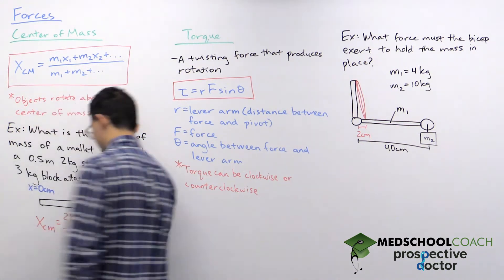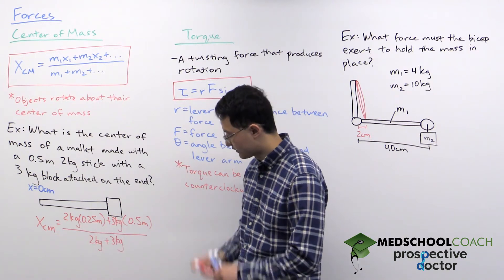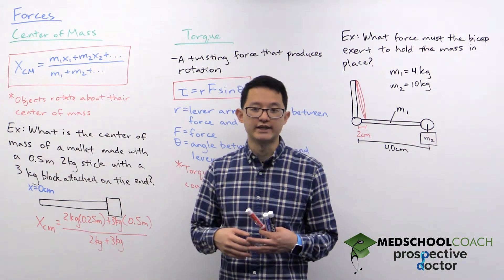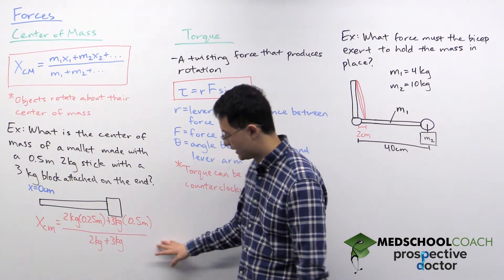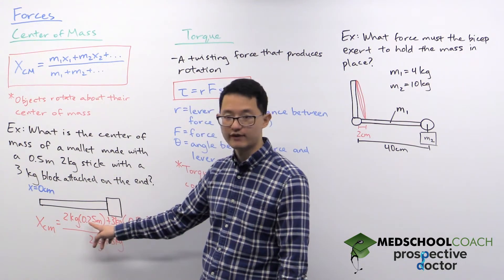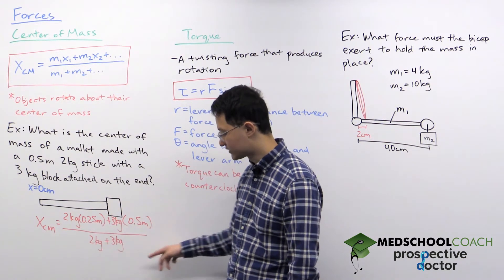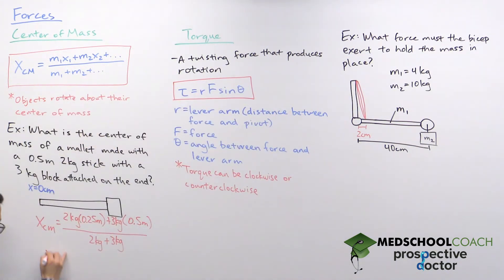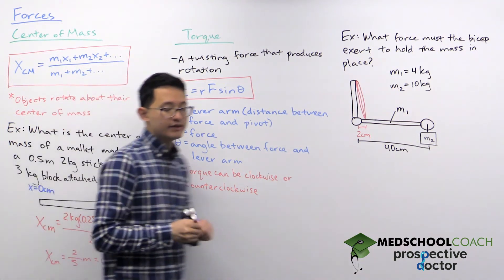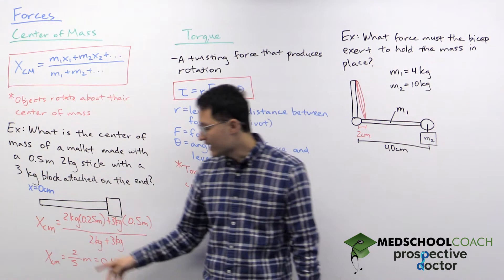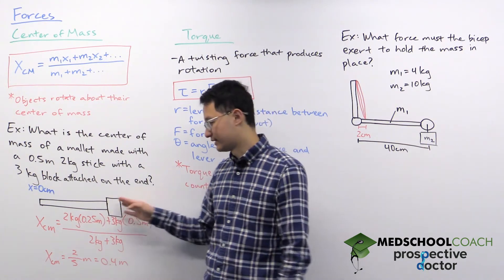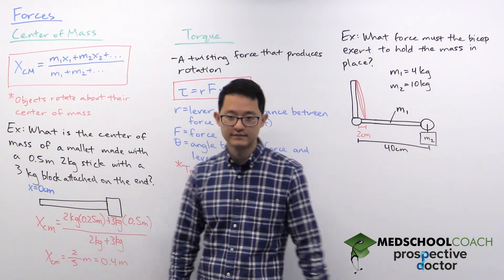Calculating: the kilograms cancel, leaving meters as the unit, which makes sense since we're finding a position. On the numerator: two times 0.25 is 0.5, plus three times 0.5 is 1.5, giving us 2.0. Divided by five total kilograms, that's 0.4 meters. So the center of mass of the mallet is 0.4 meters along the stick — fairly close to the heavier block end.